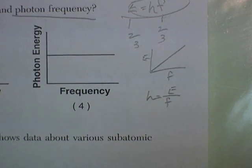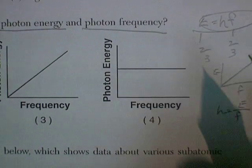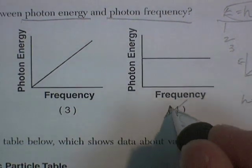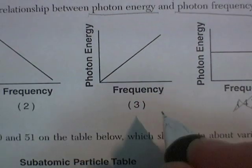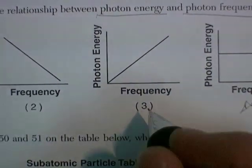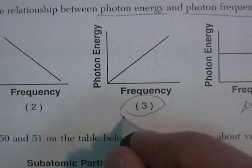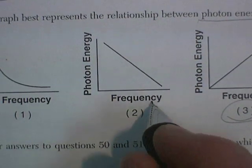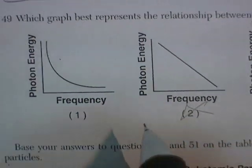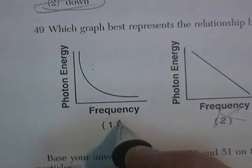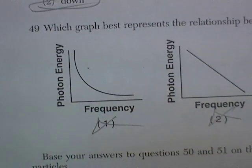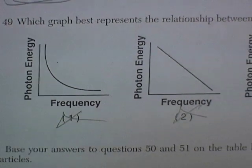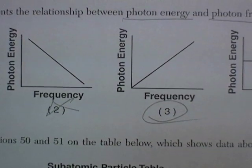So let's go find that graph. Energy of a photon stays the same — no. Energy goes up directly — that's the right answer. Energy goes down — that's not right. Energy goes down — that's not right. Correct answer there.